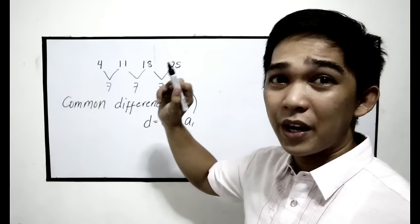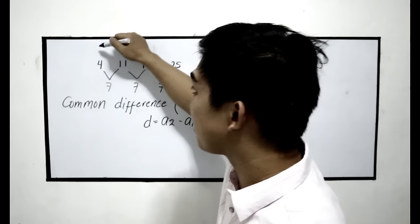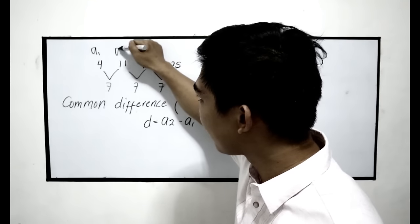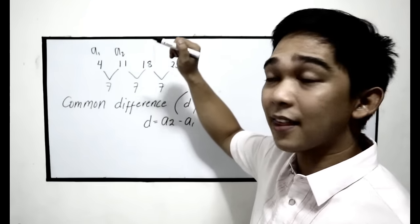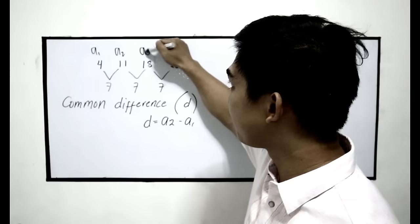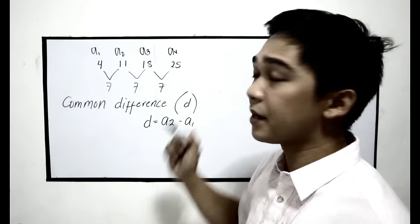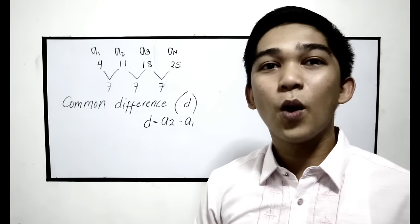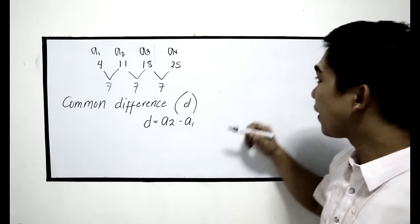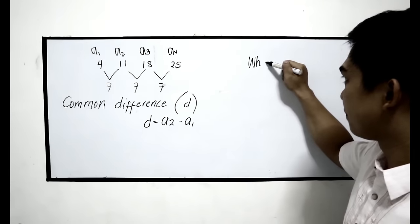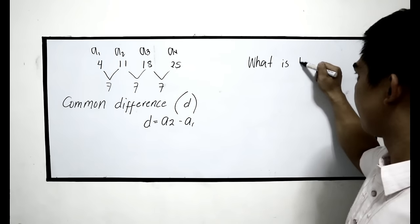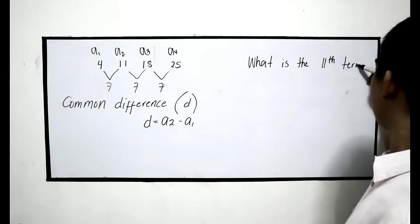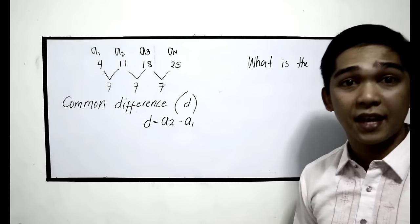What is a1, a2, a3? A1 is denoted by our first term. A2 will be our second term. A3 will be the third term, and a4 will be the fourth term. What if your teacher asks you, what is the eleventh term of the arithmetic sequence?